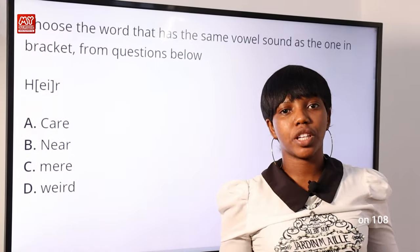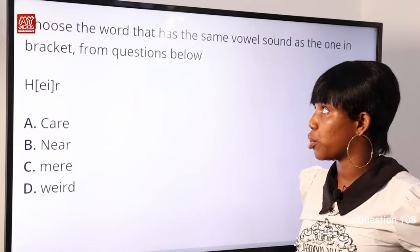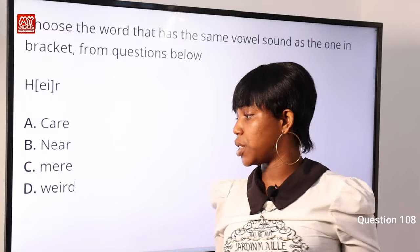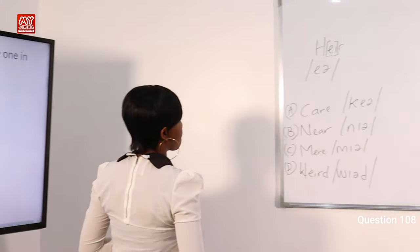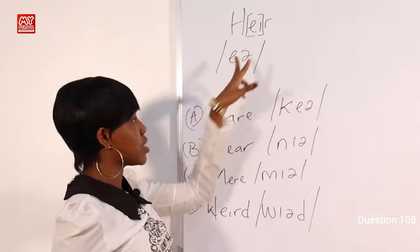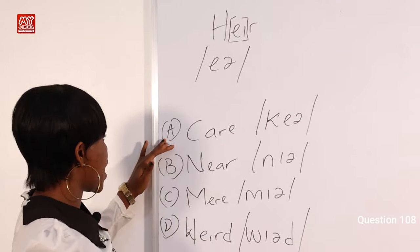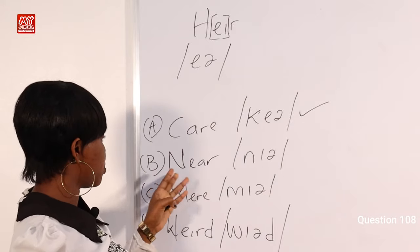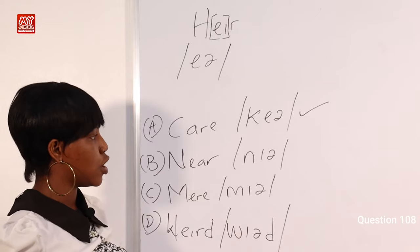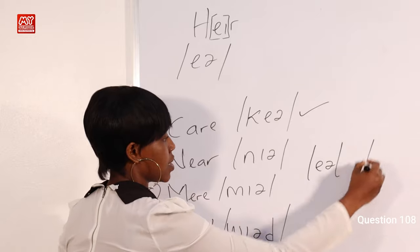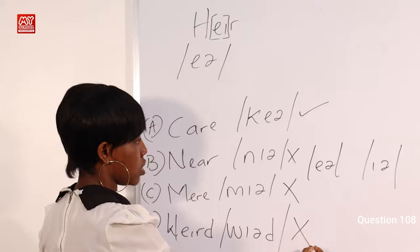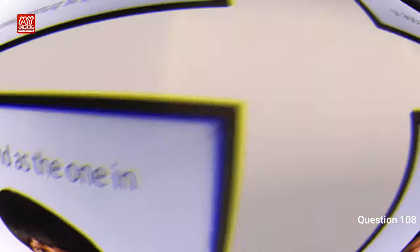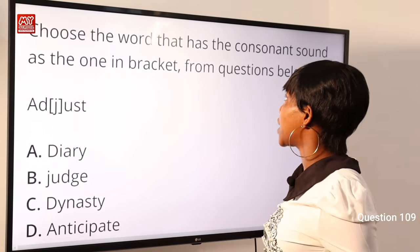Question 108: Choose the word that has the same vowel sound as the one in brackets. The word is 'heir,' where H and R are silent, so it is pronounced as 'air.' Options: A) care, B) near, C) mere, D) weird. Option A) care has the same diphthong vowel sound as 'heir/air.' Options B, C, and D have different vowel sounds. Option A) care is the correct answer.